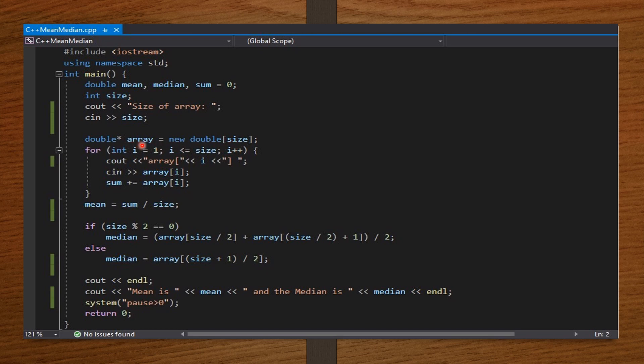This is a recent invention. Before, it wasn't possible to allocate memory spaces during runtime, but now it is possible. Now I set the for loop, which will take the numbers in the array and also sum them up. I close my for loop and compute for the mean. Now I compute for the median, if the size is even and if the size is odd. The end line here will leave a space. And finally, I display the mean and then the median. After that, I end my program.